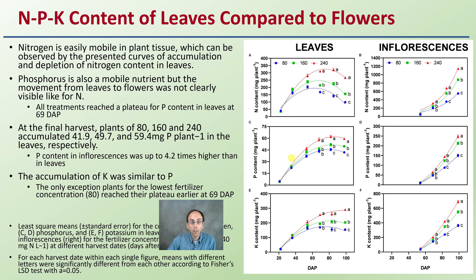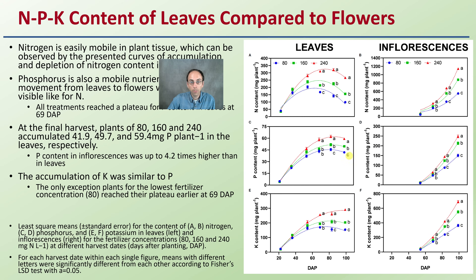All treatments reached a plateau for phosphorus around day 69. At the final harvest, plants receiving 80, 160, and 240 milligrams per liter accumulated 41.9, 49.7, and 59 milligrams of phosphorus per plant in the leaves respectively. Phosphorus content in inflorescence was up to 4.2 times higher than in leaves. The accumulation of potassium was similar to phosphorus, except plants at the lowest concentration of 80 reached their plateau earlier at day 69.